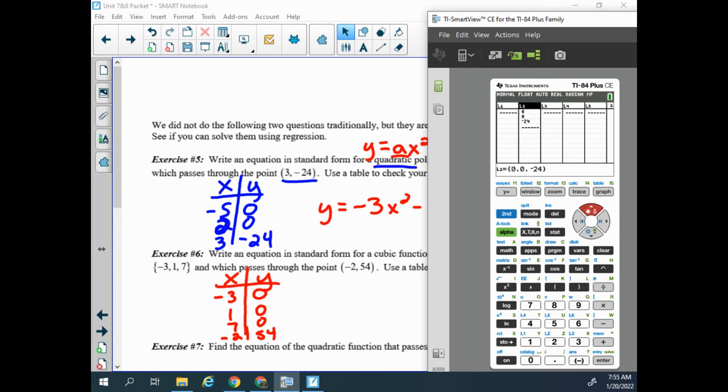Clear my lists. And negative 3, 1, 7, negative 2, and 0, 0, 0, 54.